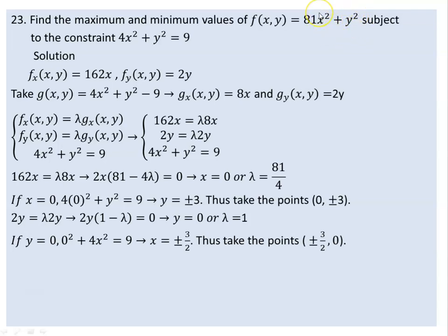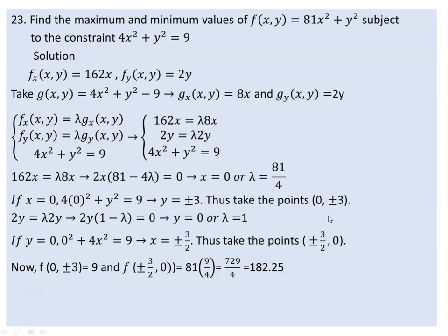We now evaluate the function at all candidate points to find absolute maximum and minimum. When x equals 0 and y equals plus or minus 3, we get 81 times 0 plus 9, which equals 9. When x equals plus or minus 3/2 and y equals 0, we get 81 times 9 over 4 plus 0, which equals 182.25.